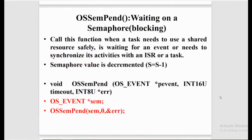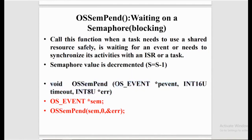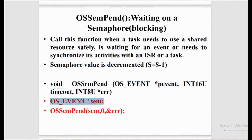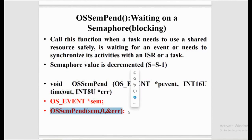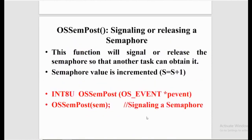Next is OSSemPend — waiting on a semaphore. Call this function when a task needs to use a shared resource safely and is waiting for an event to synchronize its activities with an interrupt service routine or another task. When this function is called, the semaphore value gets decremented. The syntax takes three arguments: p_event, which is a pointer to the OS_EVENT data structure; timeout, an integer; and error. The semaphore is declared as a pointer to OS_EVENT, and the three arguments passed are: semaphore, timeout (which is zero), and the address of error.